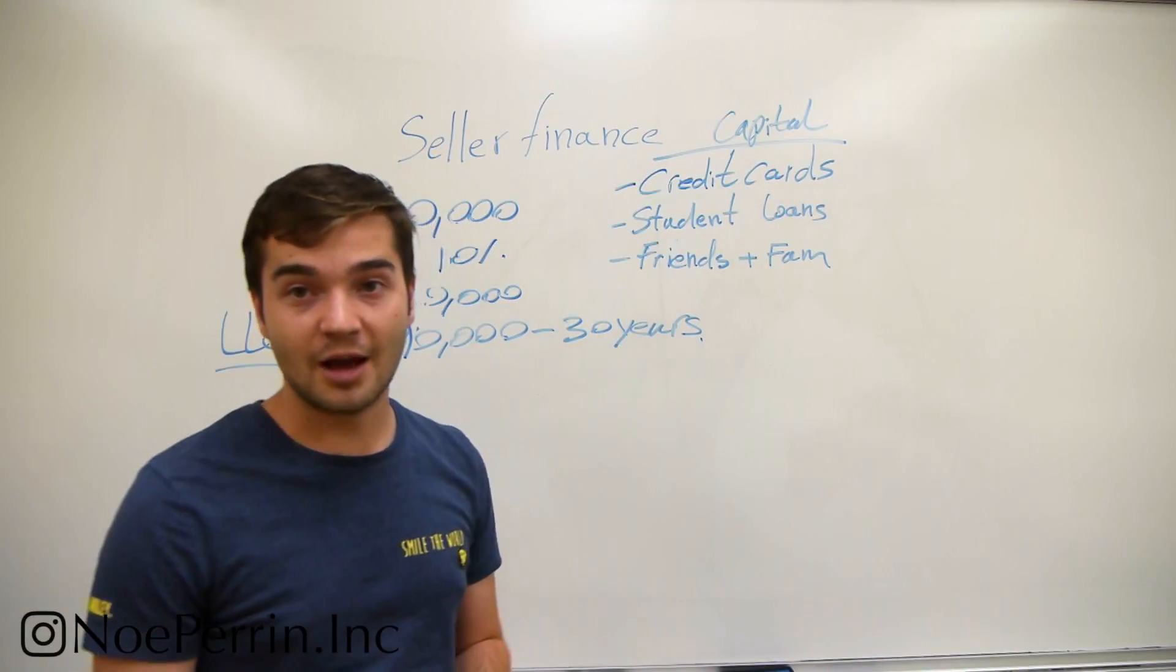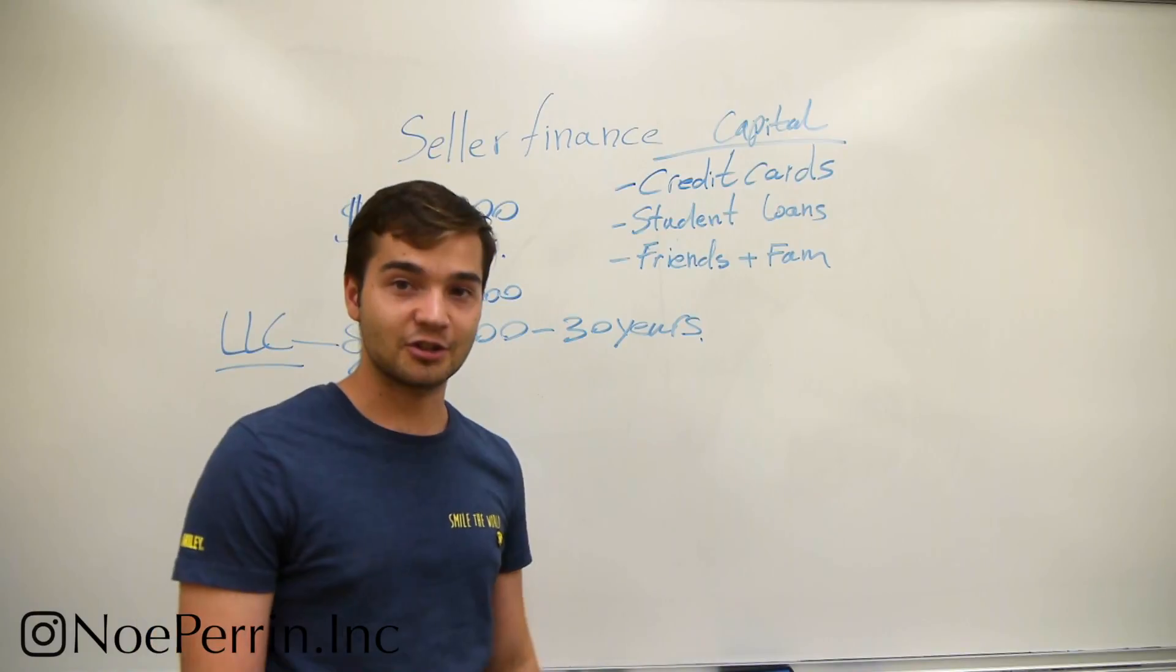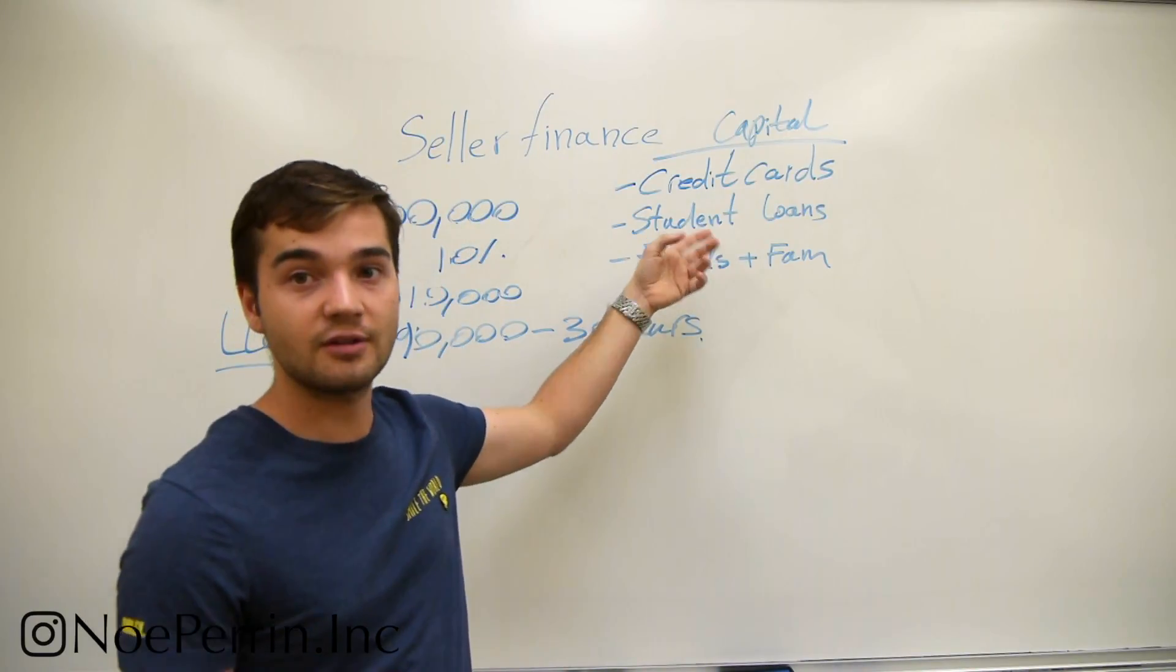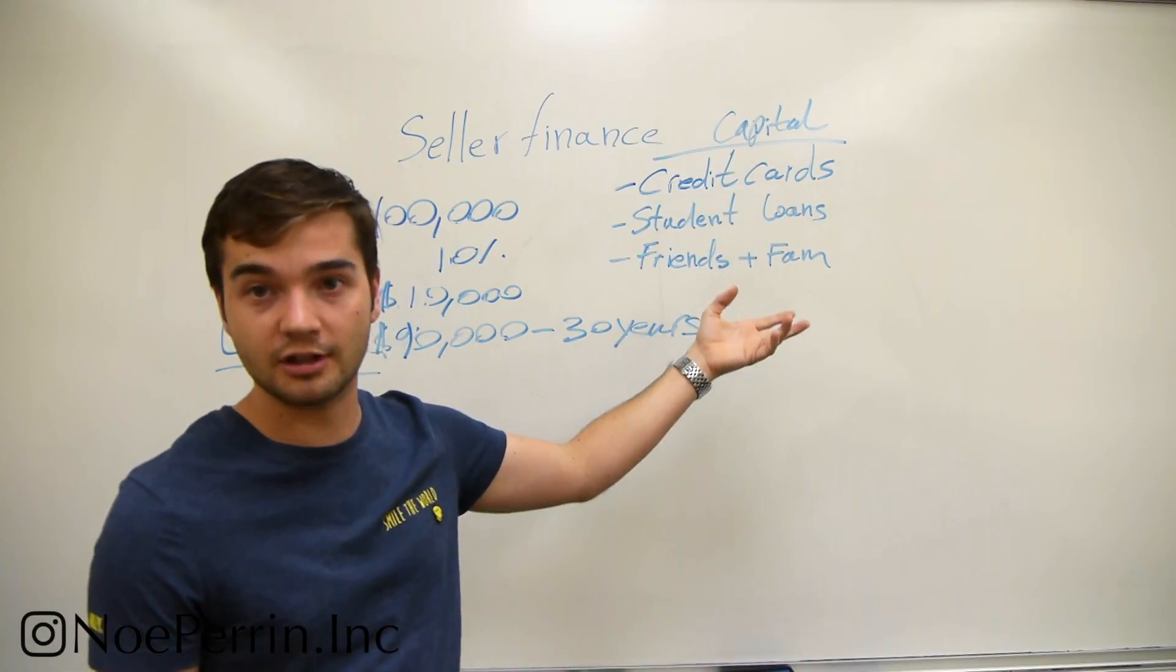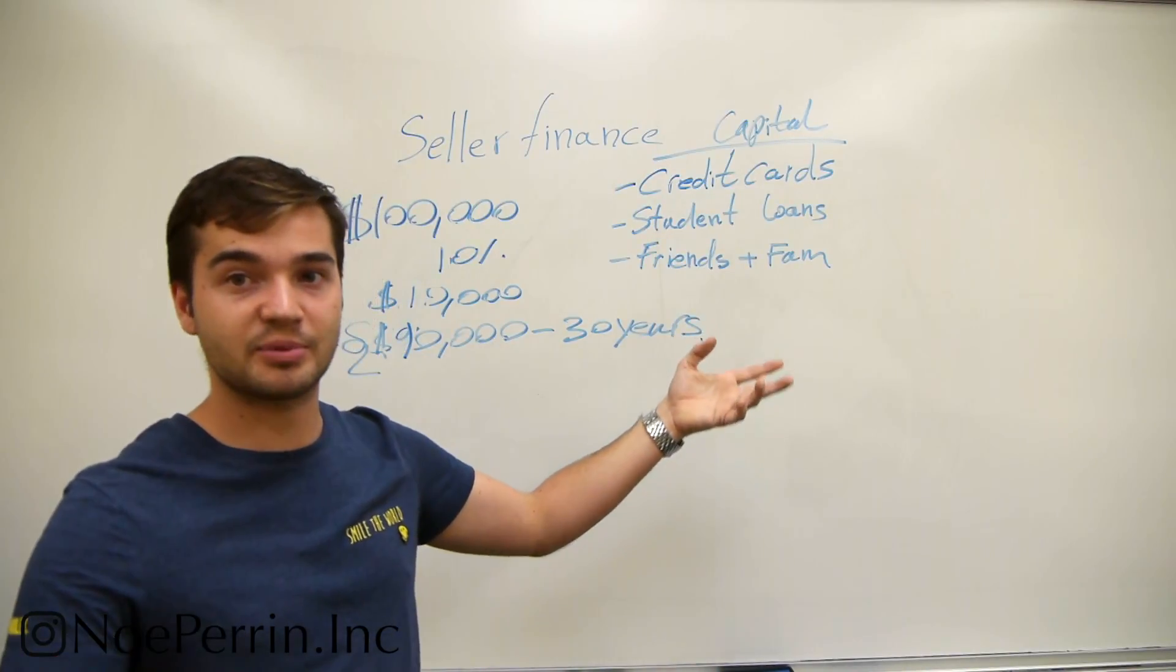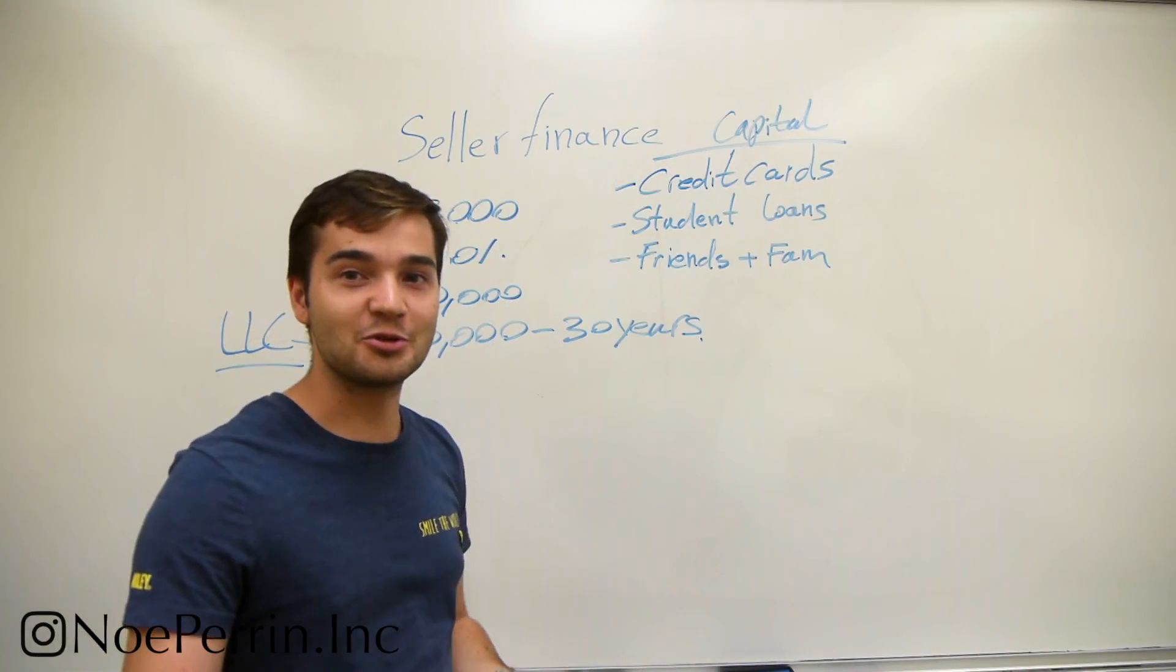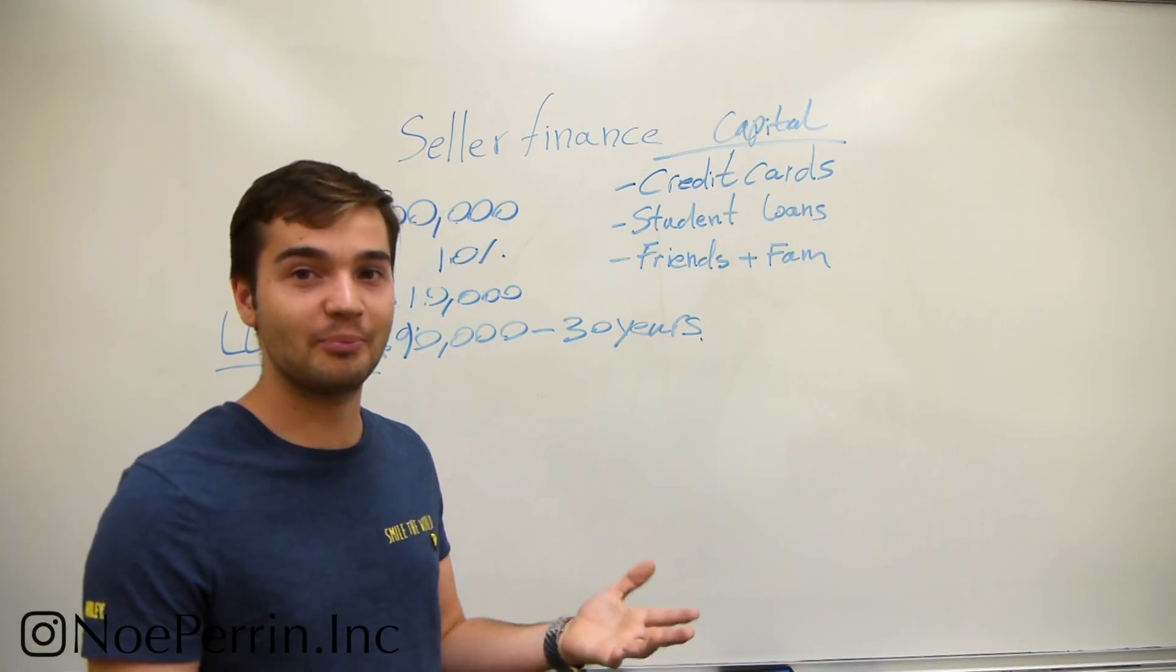Another thing that you could use as a down payment is a student loan. That's going to be a little controversial, but student loans, at least the federally subsidized loans, actually have pretty good interest rates of about 4.5%. And you don't have to repay them until after you graduate college, so it could be an option.